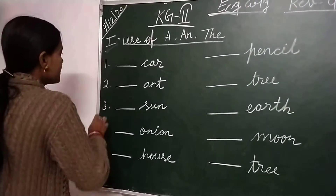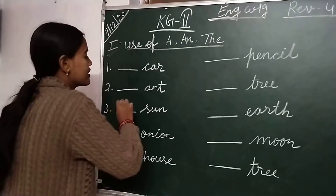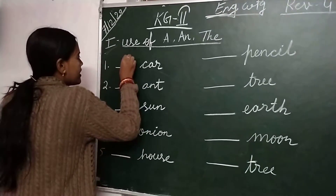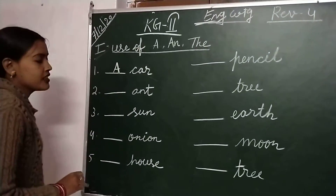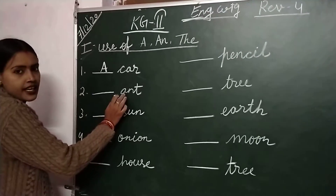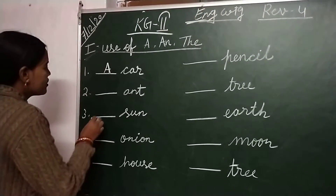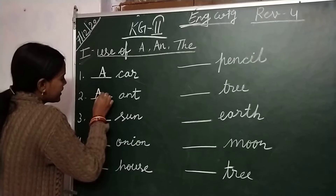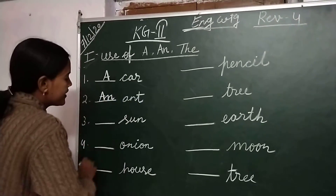So children, first letter is car. Write down: a car. Number 2 is ant, A-N-T. So children, write down: an ant.